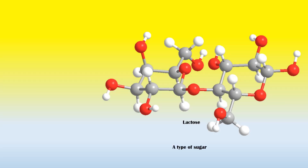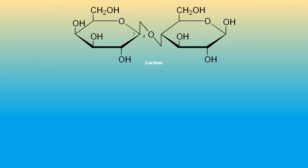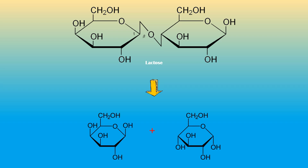Lactose is a type of sugar mainly found in milk and some processed foods. It is a disaccharide made up of one glucose molecule and one galactose molecule. In order to get absorbed into the body, lactose should be hydrolyzed to its precursors, glucose and galactose, in the small intestine. This process is catalyzed by an enzyme called lactase, which is secreted by the small intestine.